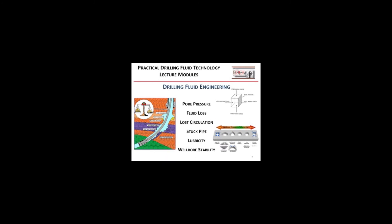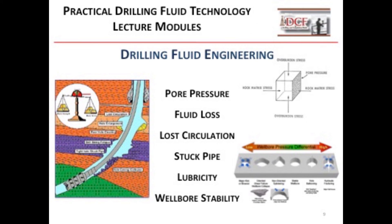Module seven covers the drilling fluid related engineering aspects of drilling operations. Thorough coverage of these topics, including calculations, takes from three to four hours. The first part of this module is a general discussion of the geological processes that set up the pore pressure and fracture gradient characteristics of the formation. Over millions of years, the earth has laid down sediments that are very stable, but drillers upset the stability by drilling through these formations. Destabilizing the formation can result in lost circulation, stuck pipe, and wellbore collapse. The physical-chemical nature of drilling fluids related to the wellbore is examined in detail, and mitigation efforts to minimize or eliminate these drilling problems are covered. Module seven also covers the geological aspects of fluid loss, mud lubricity issues, and corrosion.